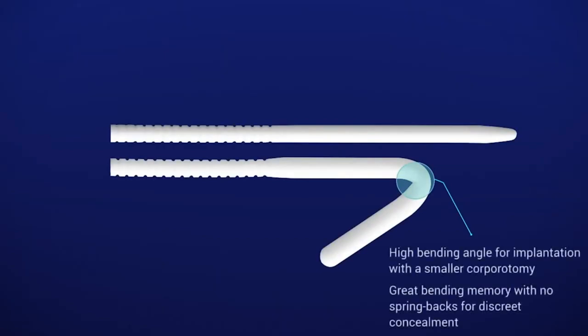The 3G10 malleable penile prosthesis has a high bending angle for implantation with a smaller corporatomy. Great bending memory with no springbacks for discrete concealment.